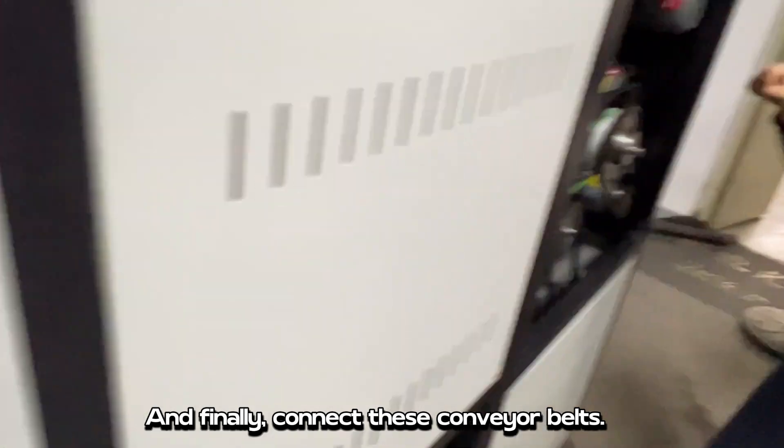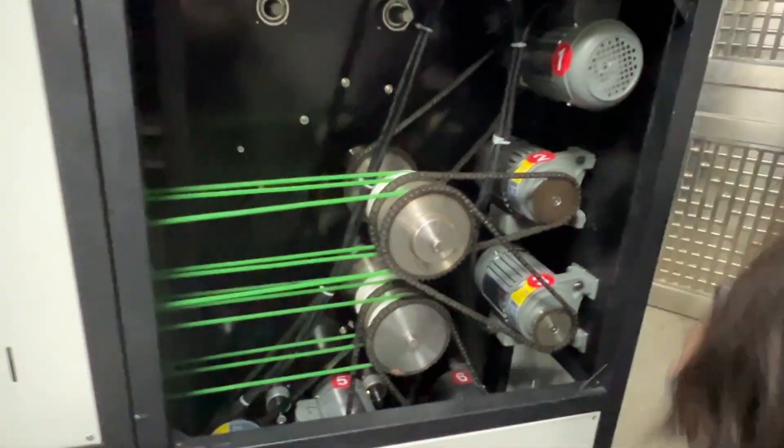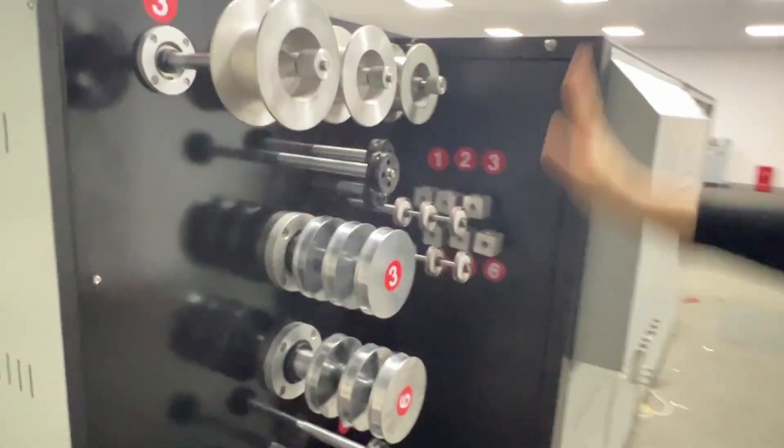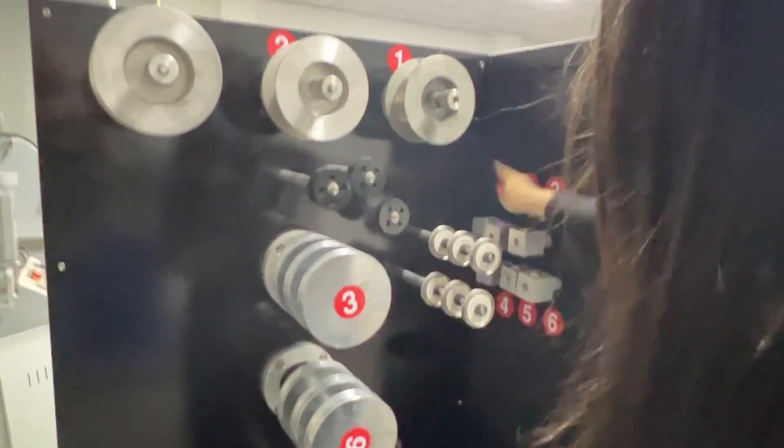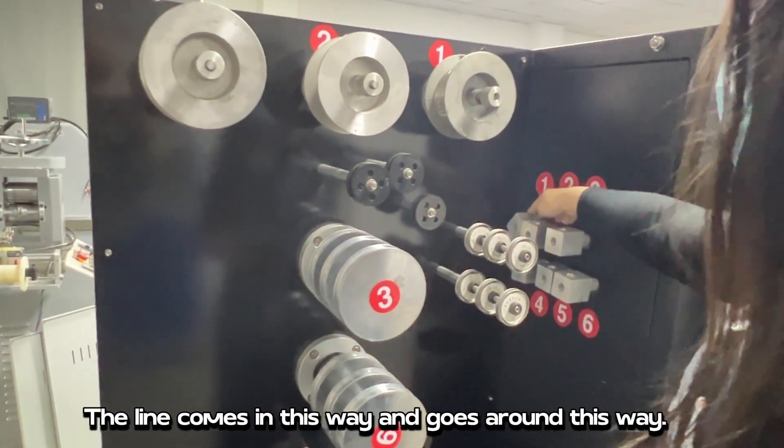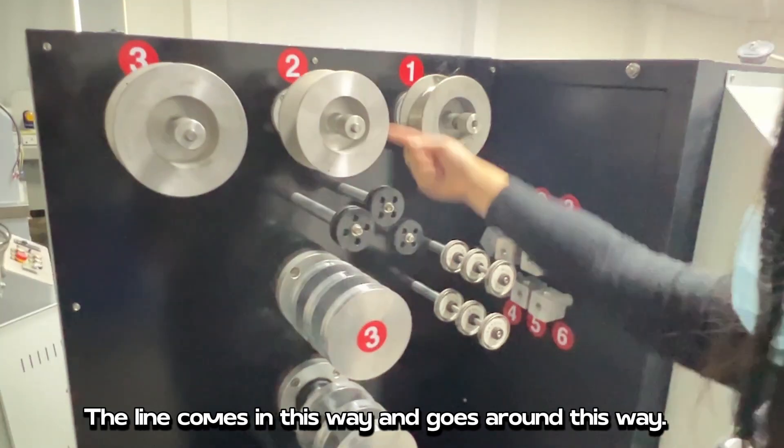And finally, connect these conveyor belts. Next is the wire feeding. Each number corresponds to each other. The line comes in this way and goes around this way.